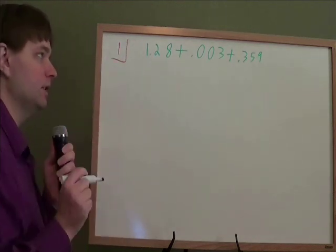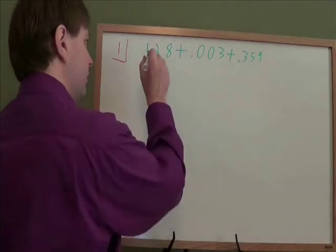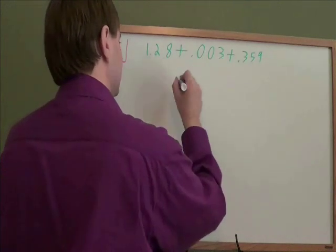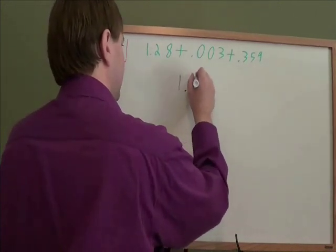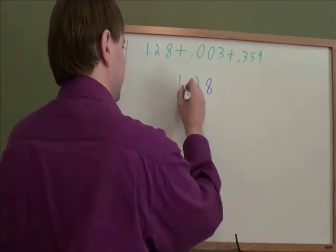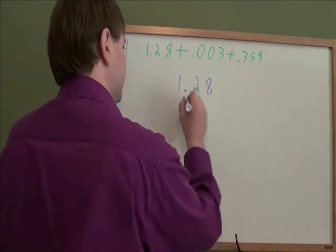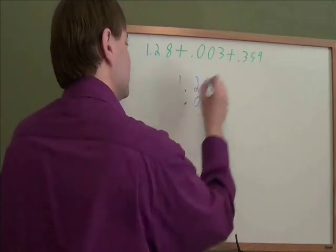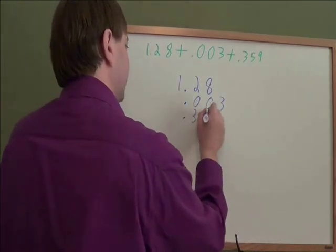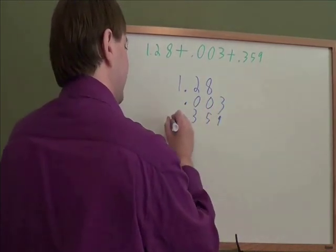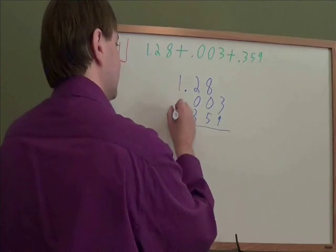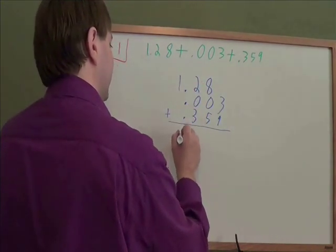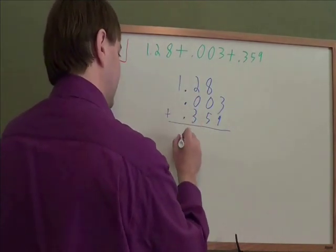In this problem, we are adding decimals. When you're adding decimals, the important thing is to line up all the decimals. So we have 1.28 with the decimal right here, 0.003, put the decimal in the same spot, just move down. Same thing here, 0.359. When you're adding or subtracting decimals, the decimals all line up vertically like that with all the ones in the question and your answer.